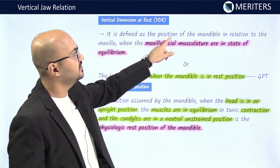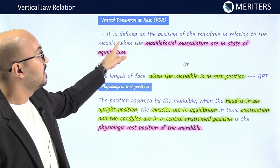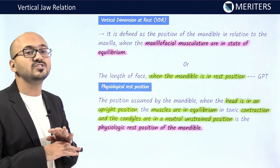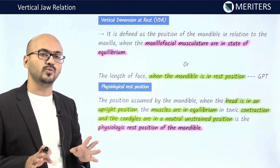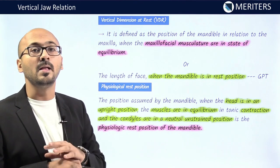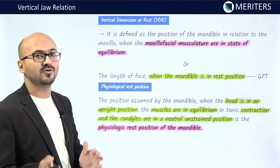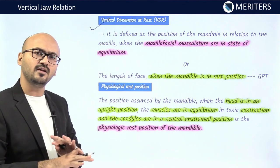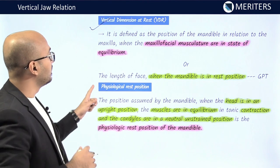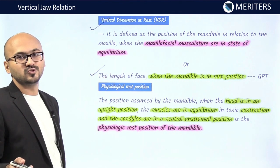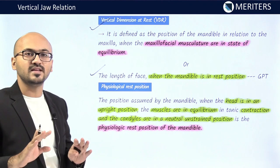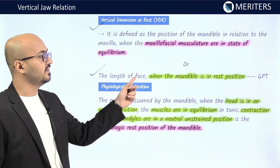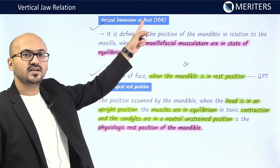Vertical dimension at rest, or VDR, is defined as the position of the mandible in relation to the maxilla when the maxillofacial musculature is in a state of equilibrium. When there is no movement of the musculature, when they are in tonic equilibrium and muscle tone is completely balanced, the relationship of the mandible to the maxilla is known as vertical dimension at rest. It is the length of the face when the mandible is in rest position.